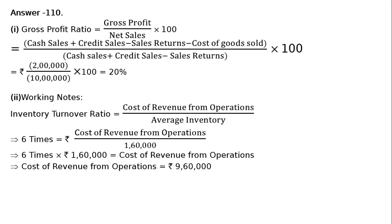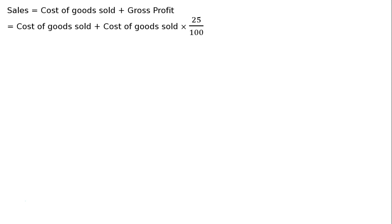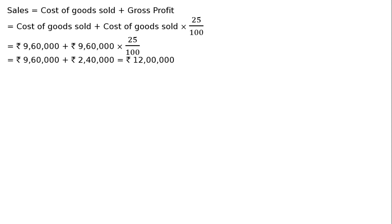Now that we have cost of revenue from operations, it is written that selling price is 25% above cost, hence 25% of cost is gross profit. Sales equals cost of goods sold plus gross profit, which equals Rs. 9,60,000 plus 25% of Rs. 9,60,000. That is Rs. 9,60,000 plus Rs. 2,40,000, which equals Rs. 12,00,000.